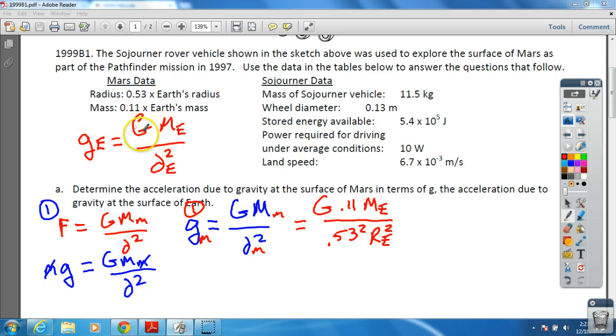If you notice, gE is equal to G times ME times the distance squared over—and so we're going to make this R. So we'll just say this is the radius of the Earth squared. Notice we have the same things right here.